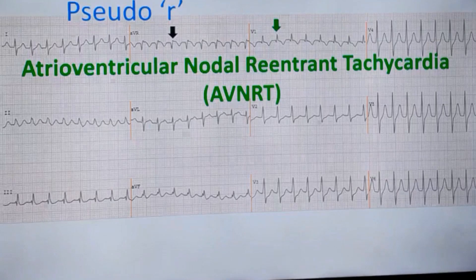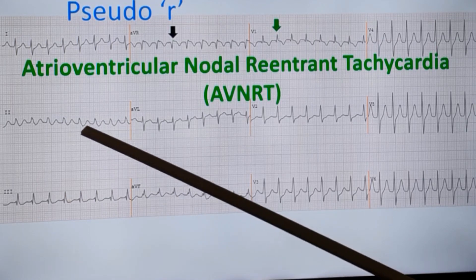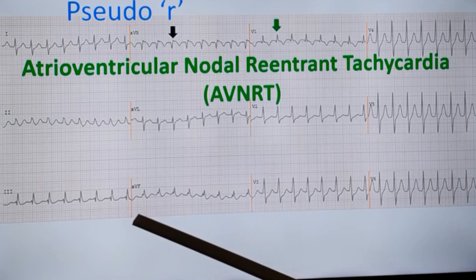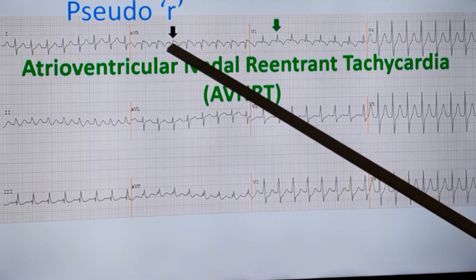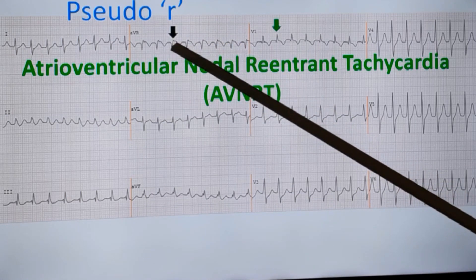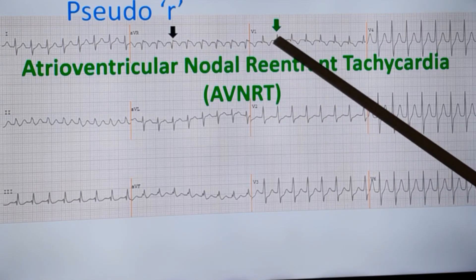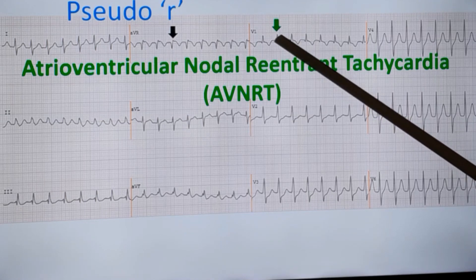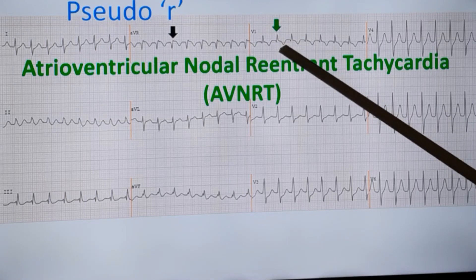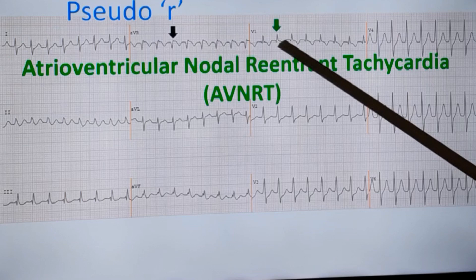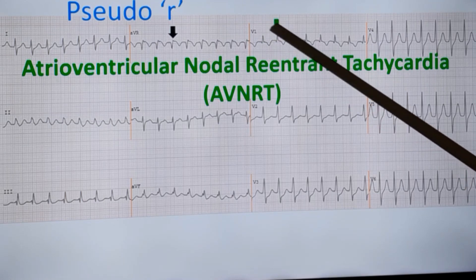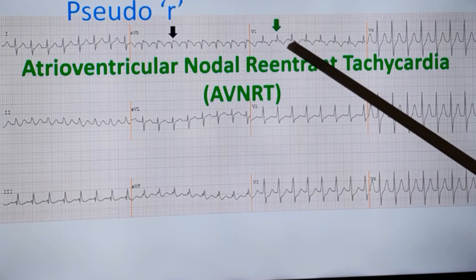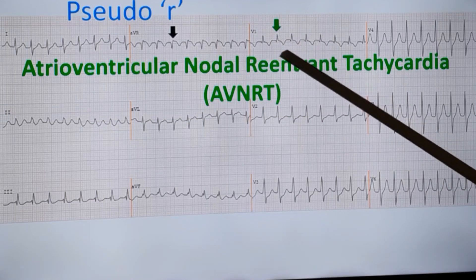We have seen the pseudo-S waves in inferior leads. Correspondingly, there could be pseudo-R waves in other leads. This is a pseudo-R wave — a small, positive wave. It is again a retrograde P-wave. In V1, this R wave is too tall to be called a pseudo-R wave; the pseudo-R wave may be within this R wave. But this tall or relatively tall R wave is unlikely to be due to a retrograde P.